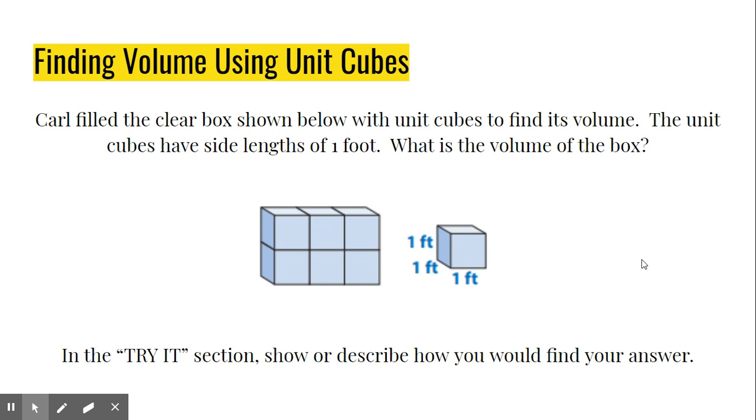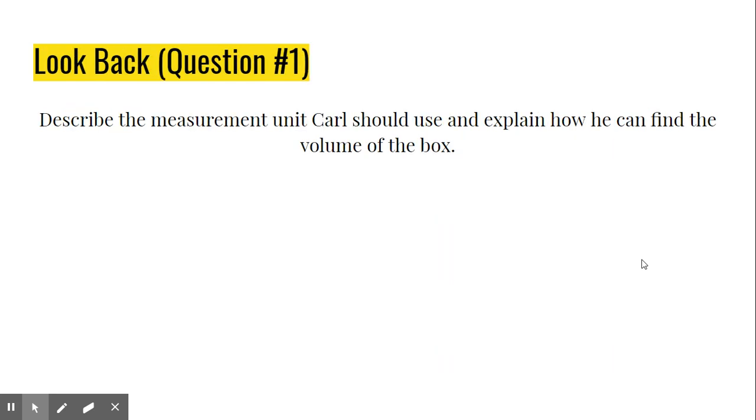So this first part, Carl filled this clear box shown below with unit cubes and figured out the volume. What's the volume of the box? If you're in class, you had some space there to show a couple different ways you could have found it. Let's discuss those on the next page. We know that each of those unit cubes had a side of one foot, so it's done in cubic feet. He could have just counted up those six boxes to give him six cubic feet.